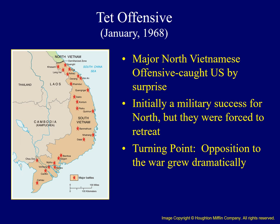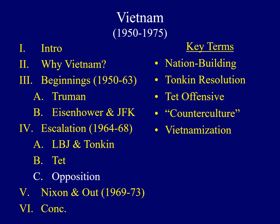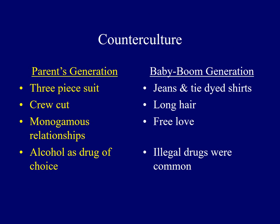We'll now explore opposition to American involvement, including members of the so-called counterculture. A few traits characterize the counterculture movement. For their parents' generation, a three-piece suit and crew cut were expected, monogamous relationships were the norm, and alcohol was the drug of choice. For the new baby boomers, jeans and tie-dye shirts were worn, long hair replaced the crew cut, free love was more popular, and illegal drugs such as LSD and marijuana replaced alcohol. Children of the baby boom seemed to want to counter everything their parents' generation had undertaken.